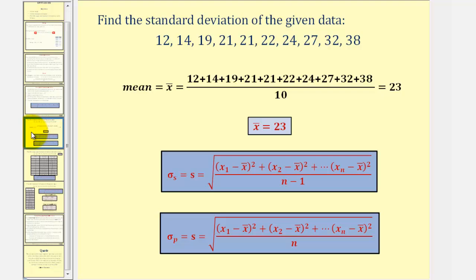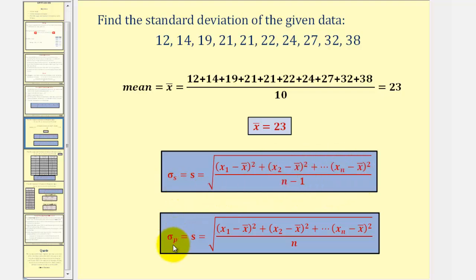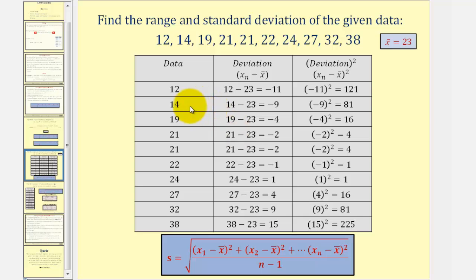To find the standard deviation of our data set, the first step is to find the mean, which we already did — it's equal to 23. This problem does not indicate whether this is a sample or a population, so we'll find both standard deviations. Sigma sub s is the sample standard deviation and sigma sub p is the population standard deviation. To keep things organized, I've arranged the information in a table.